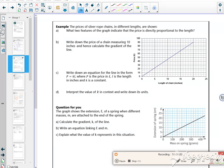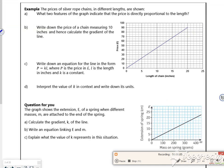Right then, so I'm going to do this other example, so this is the second vid along. It says the pieces of silver rope chains in different lengths are shown. What two features of the graph indicate that the price is directly proportional? Well the first one is it's a straight line, and the second one is it goes through the origin.